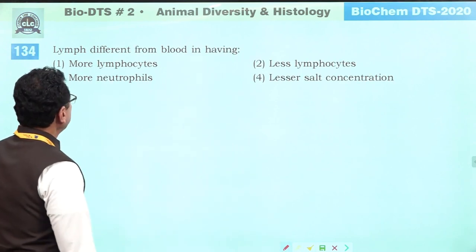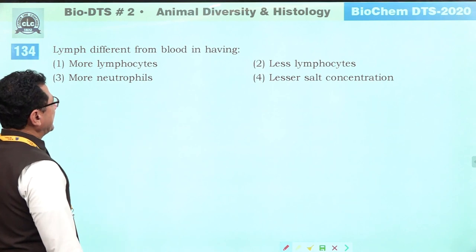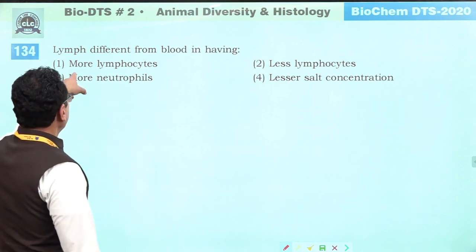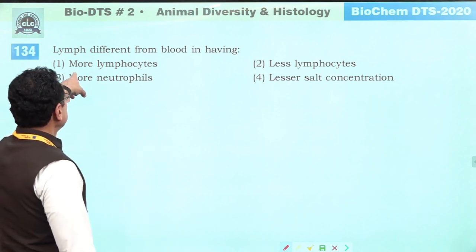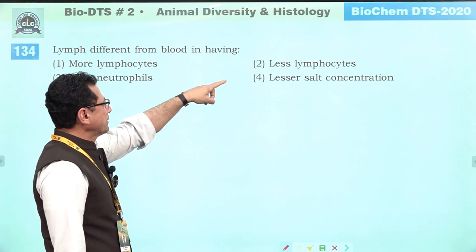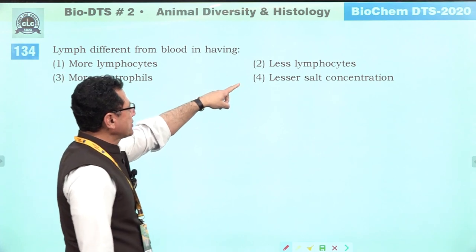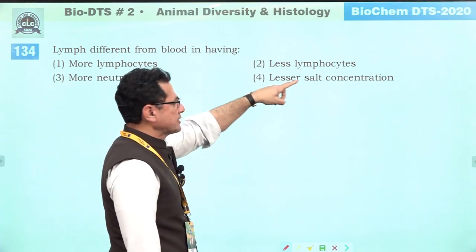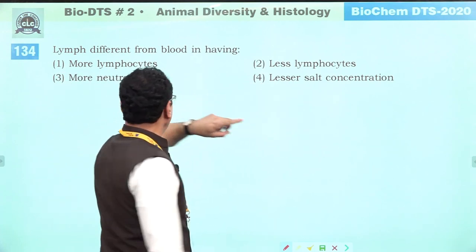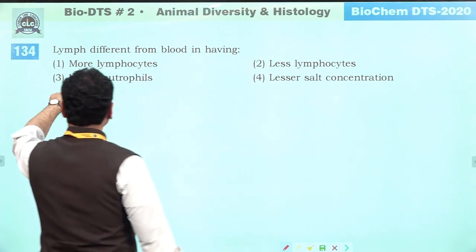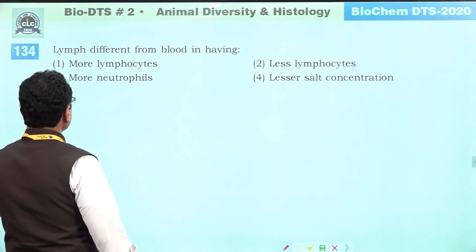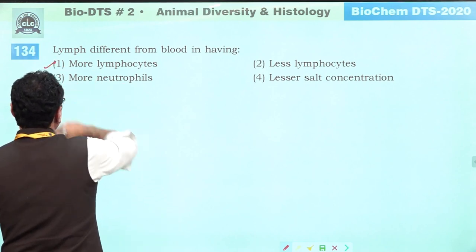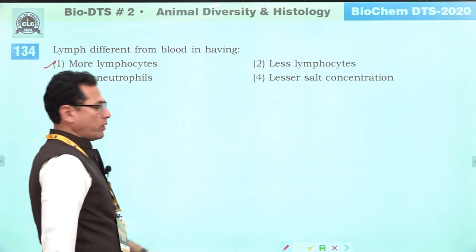Lymph differs from blood in having more lymphocytes. Less lymphocyte — no. Less salt concentration — no, salt concentration is equal. More neutrophil — also incorrect. Lymph has more lymphocytes. Answer is one.